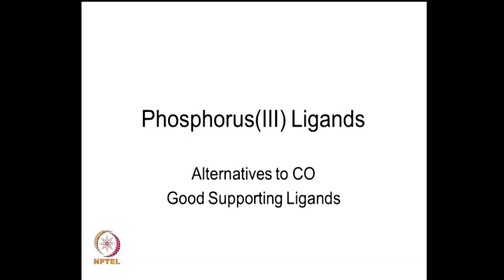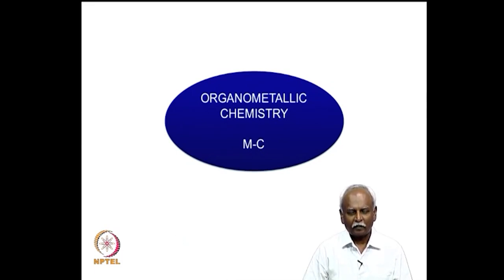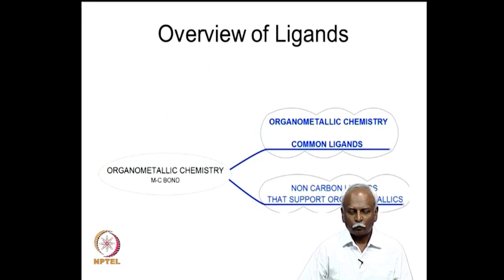In this lecture, we are going to talk about some ligands which are based on phosphorous in the oxidation state 3 — phosphorous(III) ligands. In many instances organometallic chemistry is associated with a metal-carbon bond, and that is correct. But you also need some other ligands to support the metal-carbon chemistry that is going on, so in general there are a variety of ligands which are useful in organometallic chemistry.